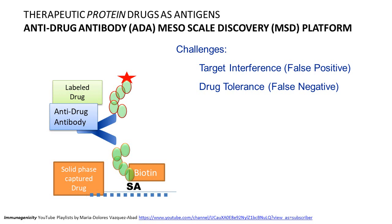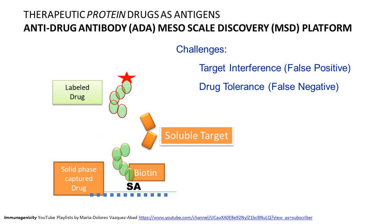Target interference arises because your drug is designed to bind a target. When that target is soluble, a patient may have it circulating in the blood — for example, VEGF for an anti-VEGF drug, or TNF for an anti-TNF drug. When the patient's blood is applied to the assay, the soluble target binds the solid-phase captured drug and is then detected by the labeled drug — mimicking a positive ADA result even when no anti-drug antibodies are present. This is why target interference produces false positive results.